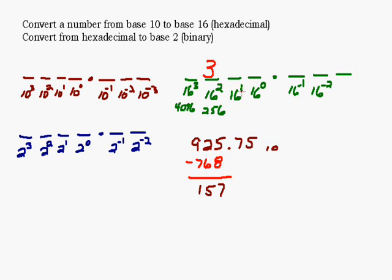Then we go to the next place value, which is 16. So how many 16s will go into 157? Well, 16 times 10 is 160, so it's probably going to be 9. So let's use red for our answer. So 9 16s will go in there. So I've got to figure out 9 times 16, that's 144. So I'm going to subtract off 144, and that leaves me with 13.